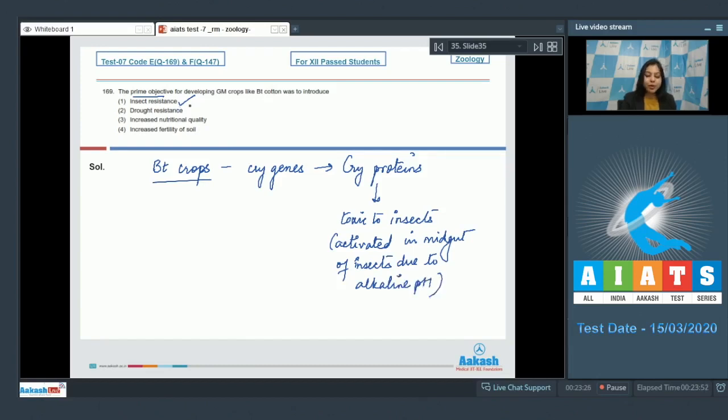Number two, drought resistance is incorrect as it is a biotic stress. Number three, increased nutritional quality - this is also incorrect as biofortification is not achieved by BT cotton. Number four, increased fertility of soil is also incorrect as this is not a feature of BT crops. So the correct answer becomes option number one.